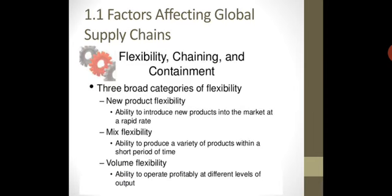Starting with the first heading: 1.1 Factors Affecting Global Supply Chains. The first important factor is flexibility. There are two related concepts: chaining and containment. We have three categories of flexibility — new product flexibility, mixed flexibility, and volume flexibility.